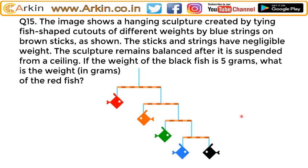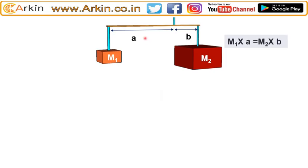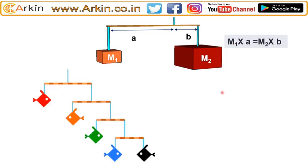In this question, a figure was shown and the weight of the black fish was given — the black fish is 5 grams. The formula being used is: M1 times A equals M2 times B, where A and B are the distances. This unit is 2 and this is 4, so 5 into 4 should equal this weight into 2, giving us 10 grams. Checking: 10 into 2 = 20, and 5 into 4 = 20.